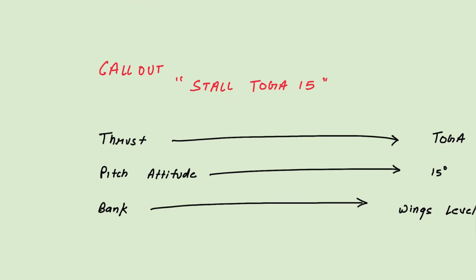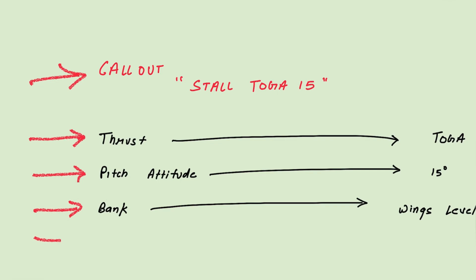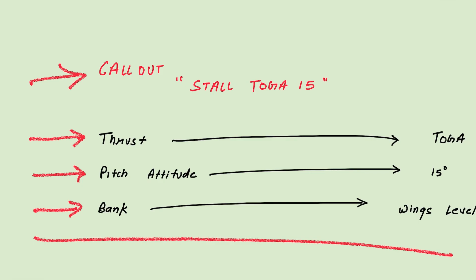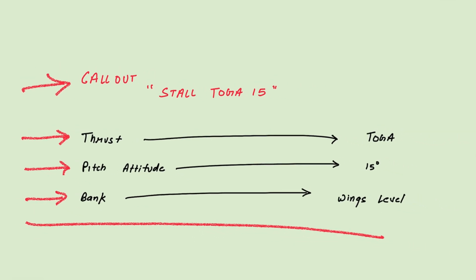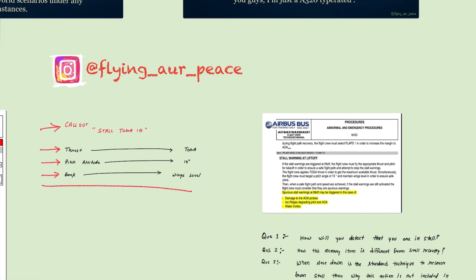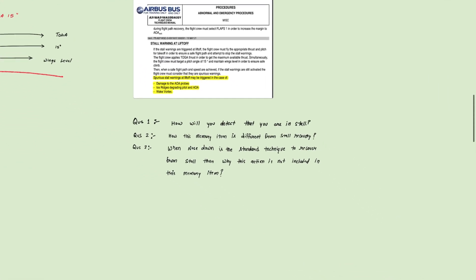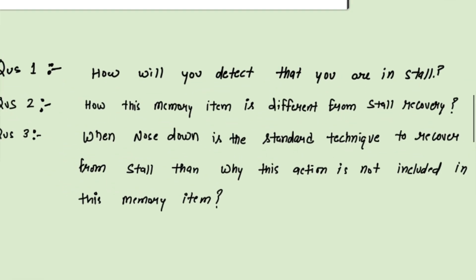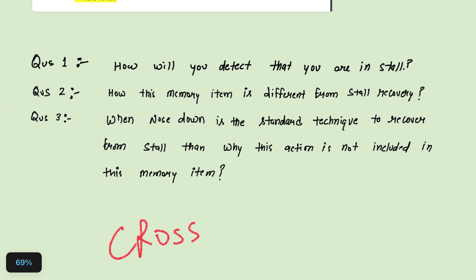If somebody asks you the memory item for stall warning at lift-off, you should say: callout — stall TOGA 15, thrust levers TOGA, pitch attitude 15 degrees, bank wings level. That's it. But if you want to know more about this memory item and all the cross questions which can be asked in interviews, stay tuned — I'll be back.